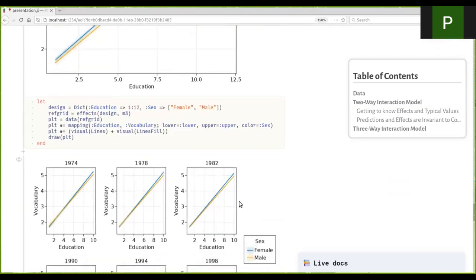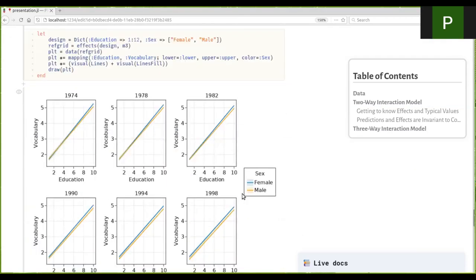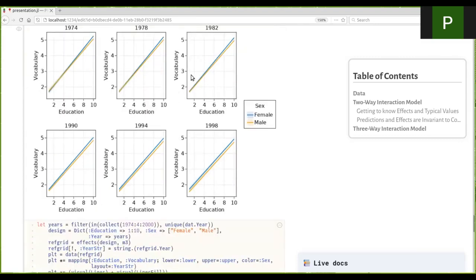We can expand this a little bit to get, for example, these small multiple plots. We can see in 1974, male and female performance looks nearly indistinguishable, but with time it looks like at every age, females have started to outperform their male counterparts.